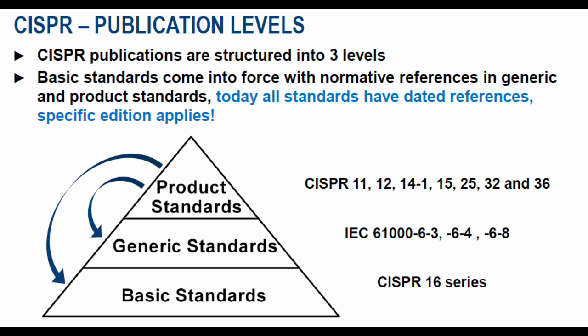In the product standards, they specifically cover which type of product can be tested and how. Examples include CISPR 11, CISPR 22, CISPR 12, CISPR 14-1, CISPR 15, CISPR 25, CISPR 32, and CISPR 36. These standards mention what level and type of test setup must be used to perform the testing.